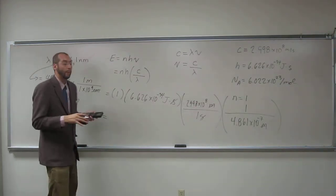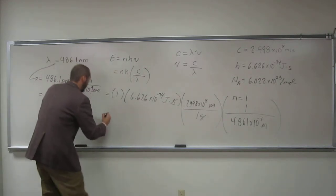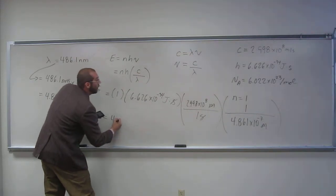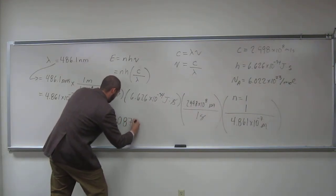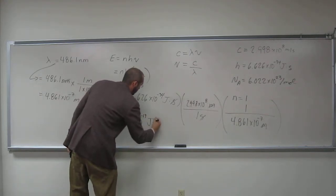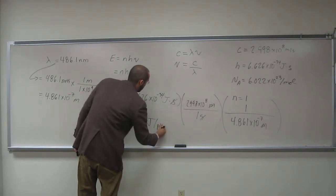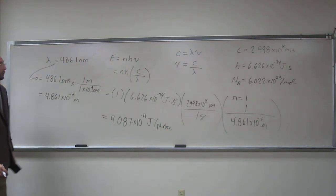And again, you should expect this to be a small number because it's one photon. So, in this case, I got 4.087 times 10 to the negative 19th joules per photon. Is everybody okay with doing that one?